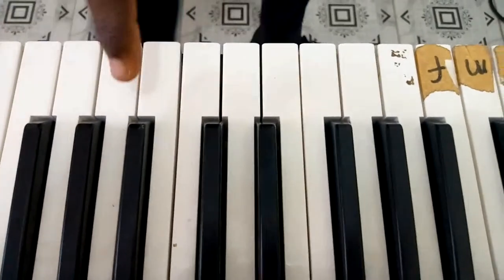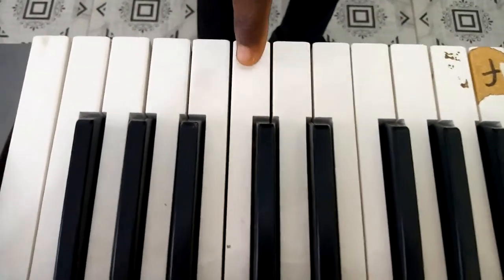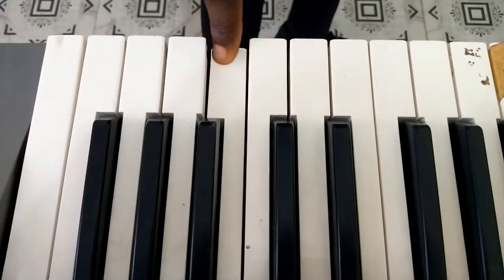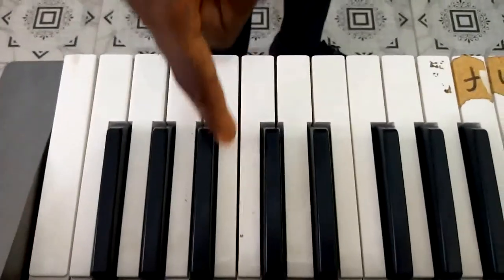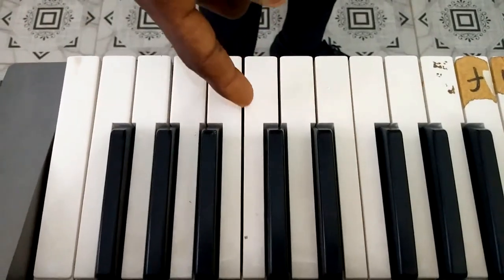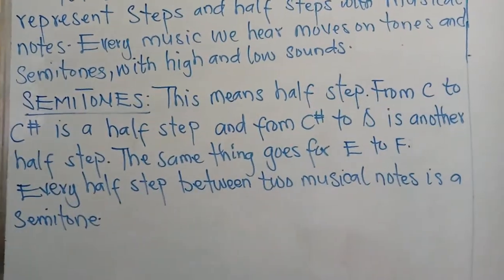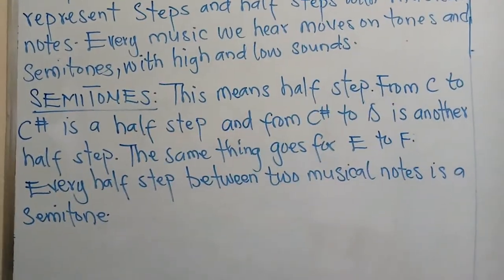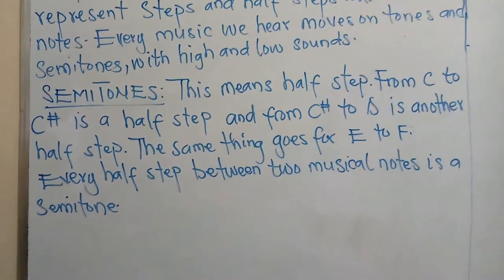The same thing goes for E. From E to F is a half step because there is no space or no notes in between both of them. Every half step between two musical notes is a semitone, so every half step can also be referred to as a semitone.